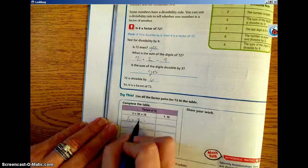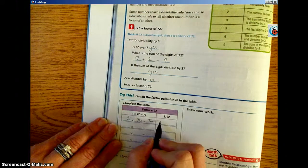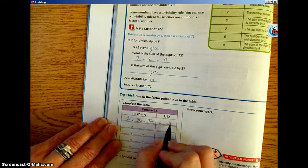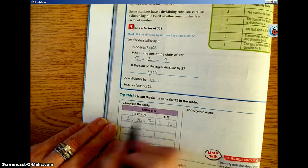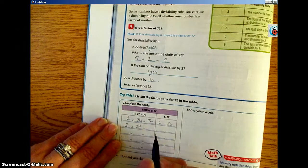Then if we just move up and we try 2 next, 2 times 36 equals 72. It's going to work. So our factor pair would be 2 and 36. Moving up to 3, 3 times 24 is going to work. So our factor pair would be 3 and 24.